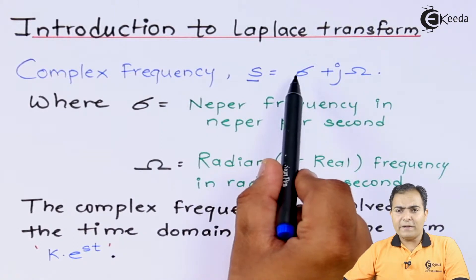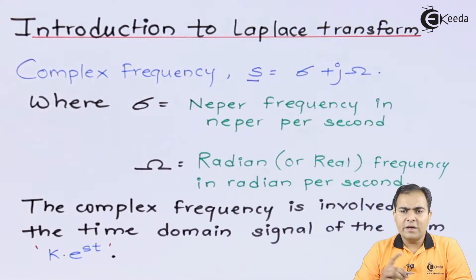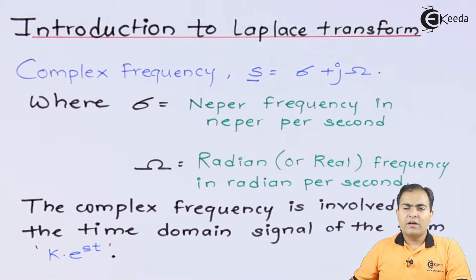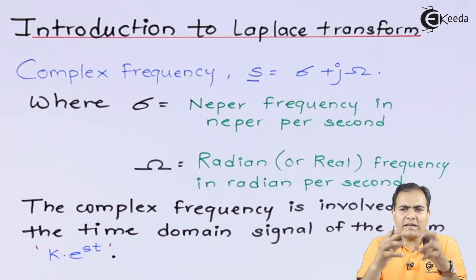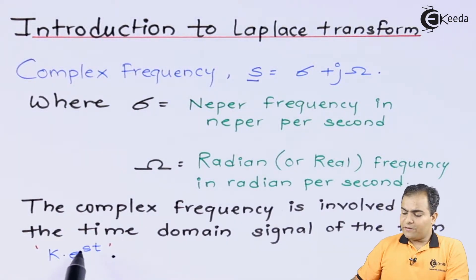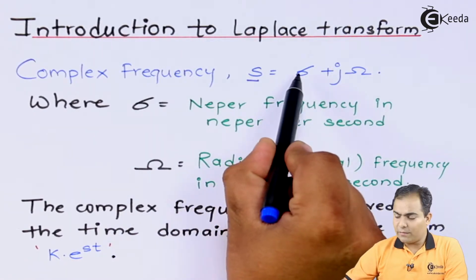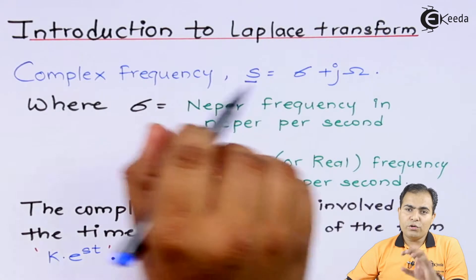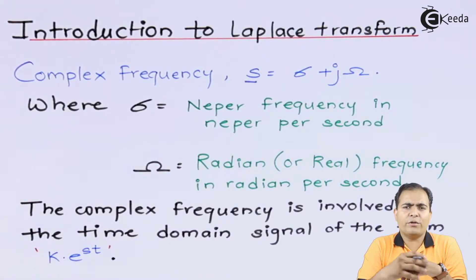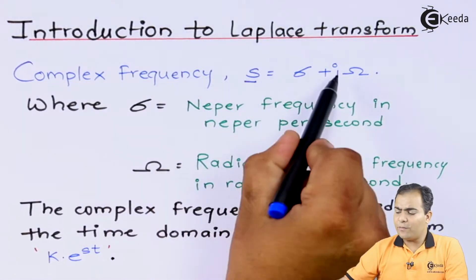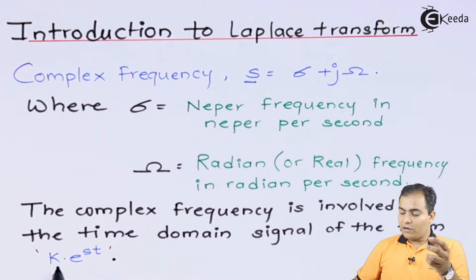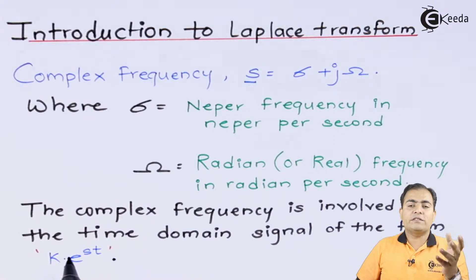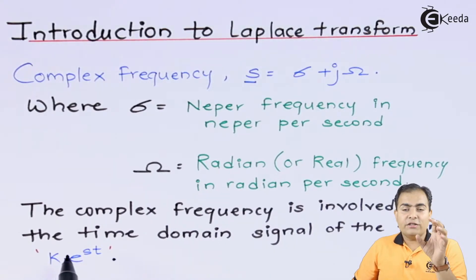We can represent the whole e to the power S·T function as k into e to the power S·T. This k·e^(ST) is considered a universal signal with respect to time. If S is substituted by sigma plus j·omega, then you can substitute different values of sigma — 0 or infinity — and similarly different values of omega. If we substitute 0 or any values of sigma and omega, the operation of k·e^(ST) will change. That is why k·e^(ST) is known as a universal signal.